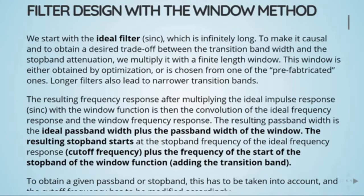Longer filters also lead to narrower transition bands. The resulting frequency response after multiplying the ideal impulse response, the sinc function, with the window function is then the convolution of the ideal frequency response and the window frequency response. The resulting pass bandwidth is the ideal pass bandwidth plus the pass bandwidth of the window. And the resulting stop band starts at the stop band frequency of the ideal frequency response, the cutoff frequency, plus the frequency of the start of the stop band of the window function, adding the transition band.